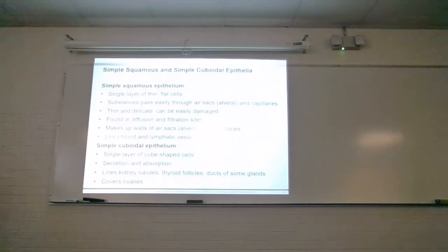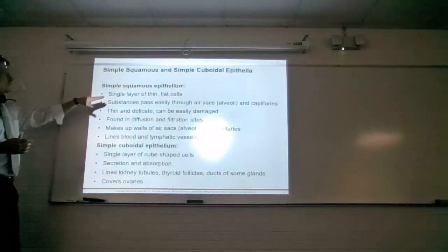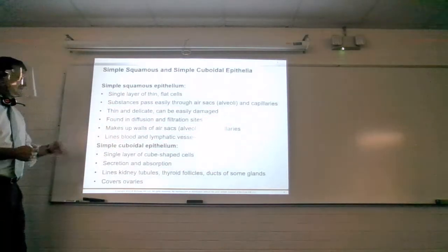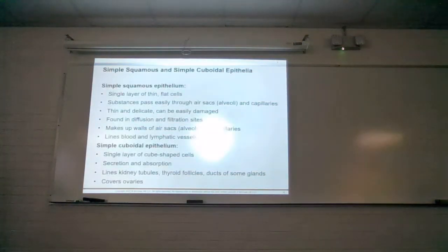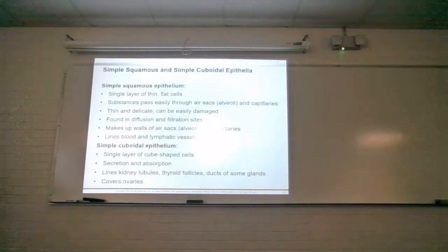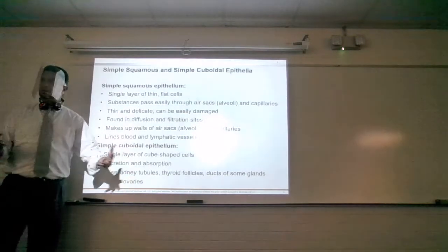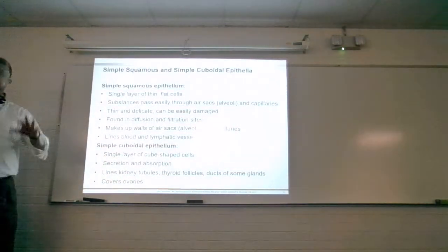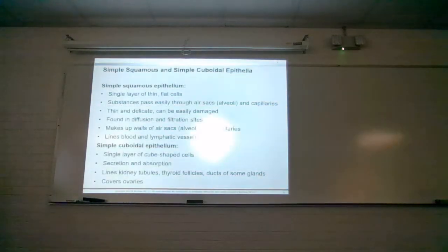Going through these quickly since it should be review. Simple squamous — one cell layer thick of flattened cells — the classic example is the air sacs of the lungs. Simple cuboidal — one cell layer thick of cube-like cells — the classic location is kidney tubules. Those are the places I would ask about.